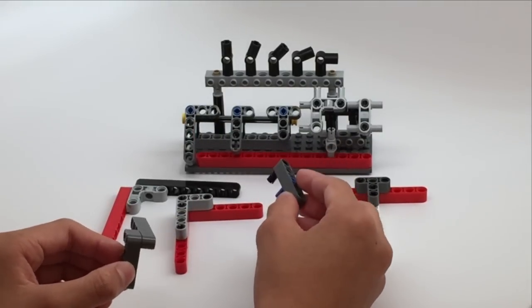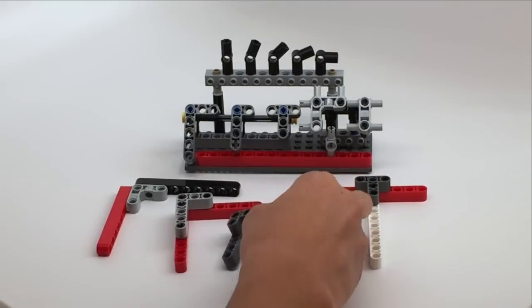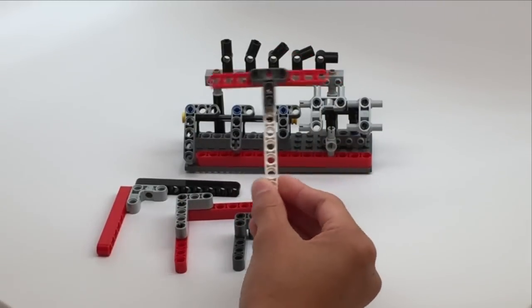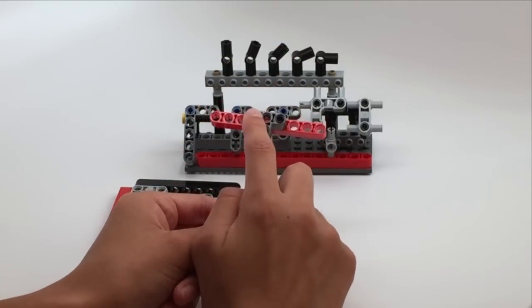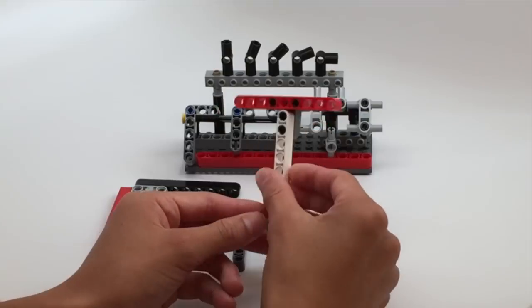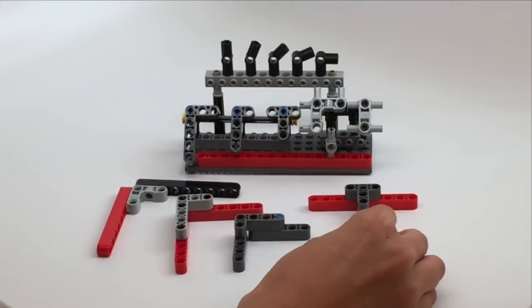To make T-shapes, we also have this T-shaped piece, which has all technic holes, and we can use these black pegs to connect it to the beams.